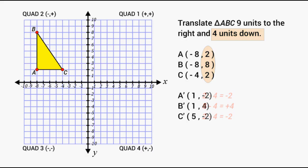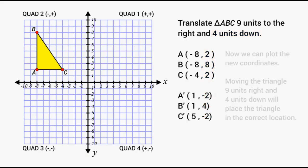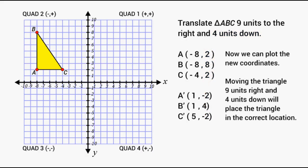So after adding 9 to all of our x values and subtracting 4 from all of the y values, we will come up with the coordinates to where our object is going to be translated to. So we can simply plot those points and then create our new object on the coordinate plane.